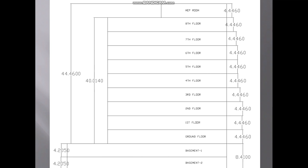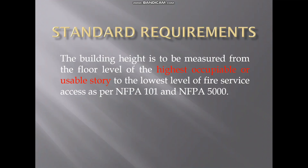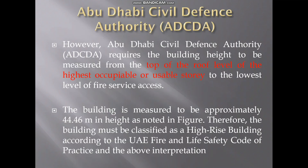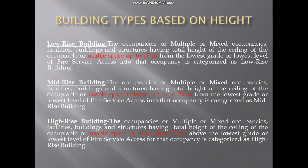Now let's see the building types based on height. We have three types of buildings: low-rise building, mid-rise or medium-rise, and high-rise building. These can be categorized based on the habitable height.